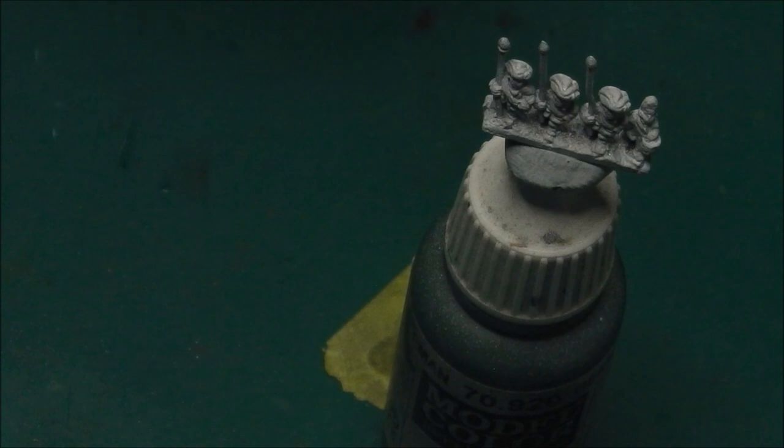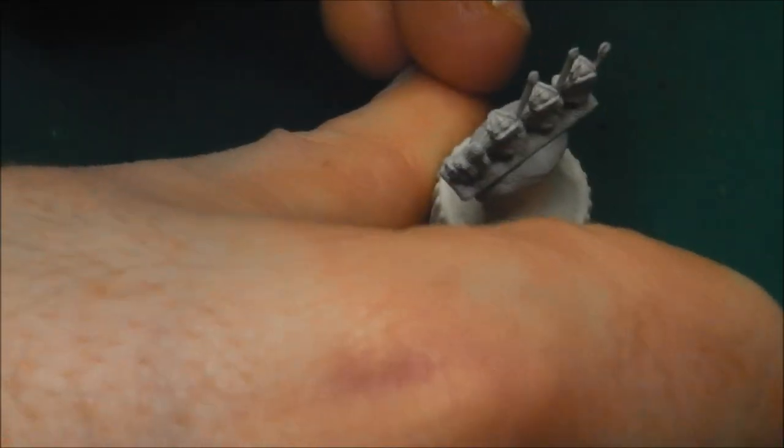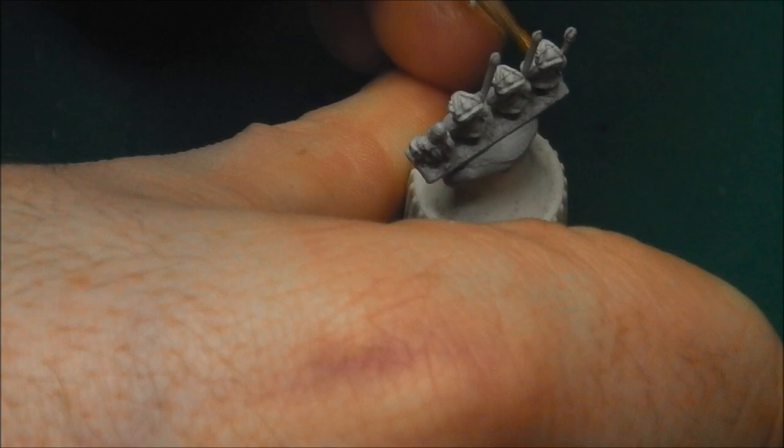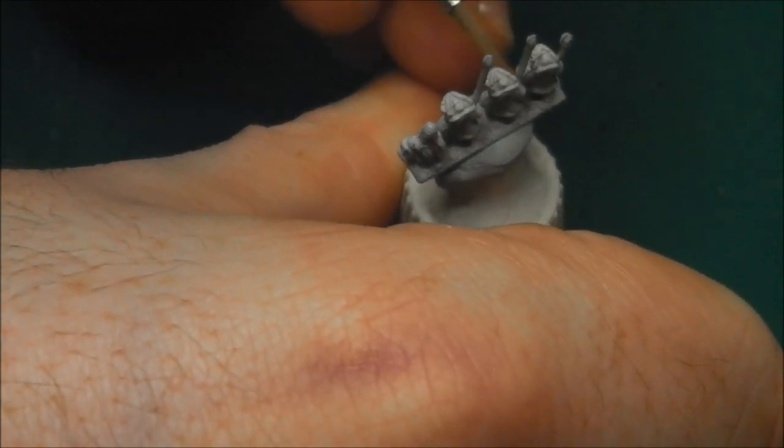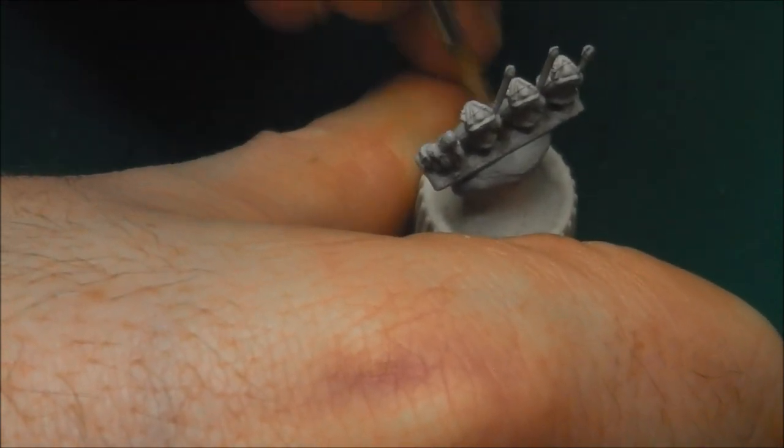So we're going to begin with the little base that they come on. I'm going to take some Vallejo Flat Earth and I'm going to paint that in now, because this can be one of the trickiest things to get right. If you have to come back and do it again, the chances of painting over detail you've painted in is quite high.